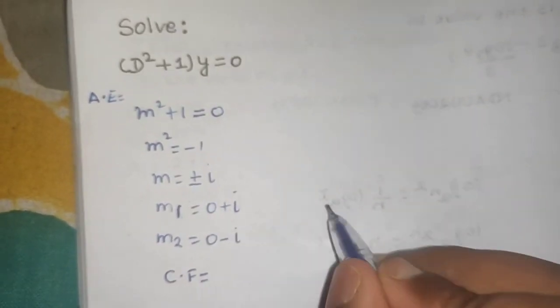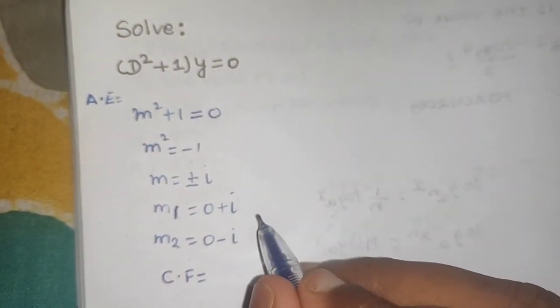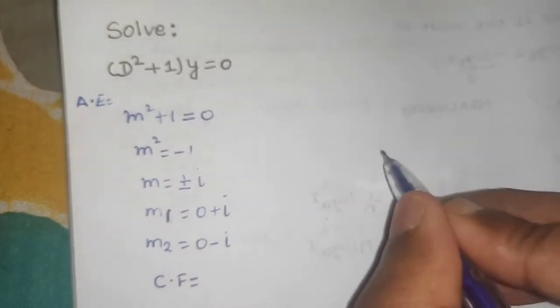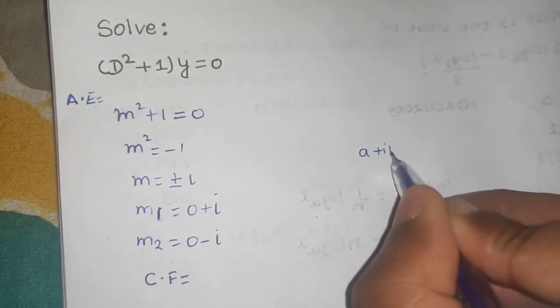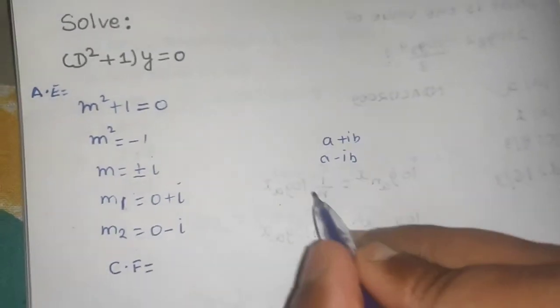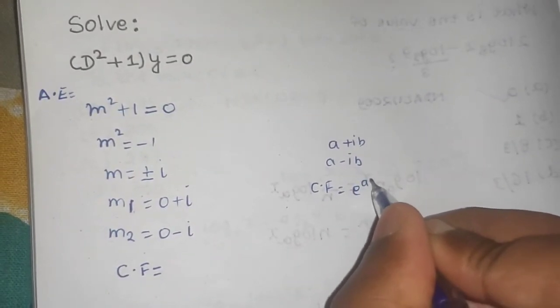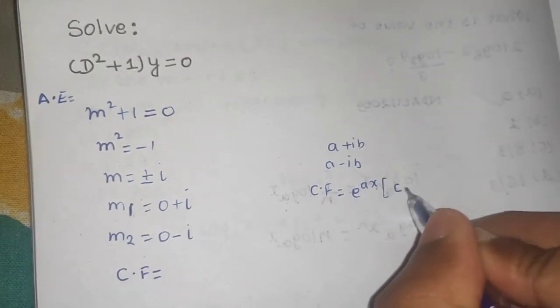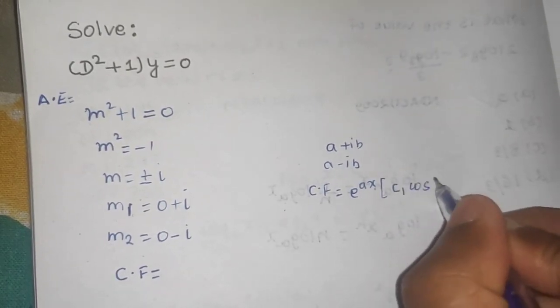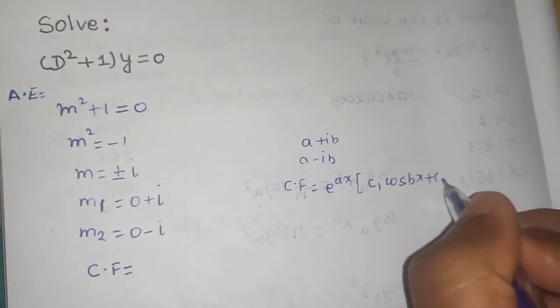The method is if we have two roots, and suppose this is like a plus iota b and a minus iota b, I write my complementary function as e power a x times c1 cos of b x plus c2 sin of b x.